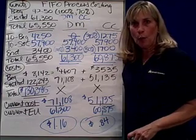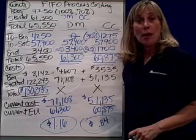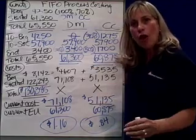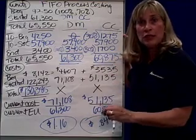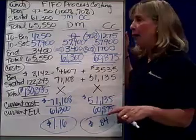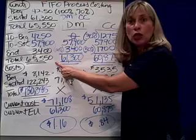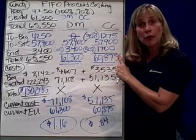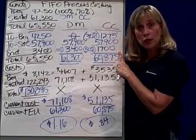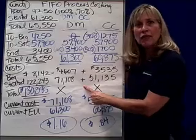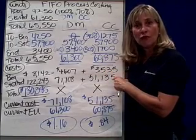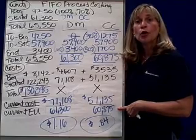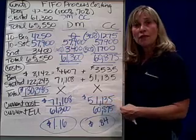Step five of the process costing report, or production report using FIFO and problem P2 in your text. Step five is to assign the cost to either the goods transferred out of your department or to ending inventory. As a quick recap: in step one we accounted for the physical units accountable in our department. Step two, we computed the equivalent units, or EUs. Step three, we recap the costs in our department. Step four: find the current cost per current equivalent unit for materials and for conversion costs.